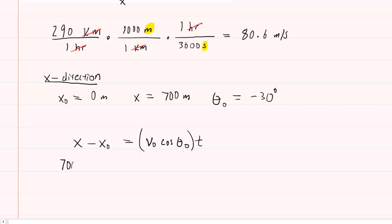So let's fill in the information that we listed above. Again, the final x-coordinate is 700 meters minus the initial, is 0 meters, equals, now remember, the initial velocity, the magnitude of the initial velocity, was 80.6 meters per second. So we'll say that right here, multiplied by the cosine of negative 30 degrees, and then times time.